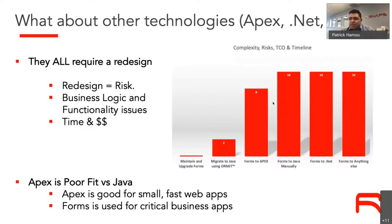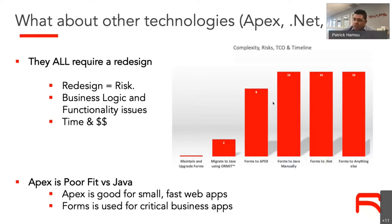Looking at other choices, some companies choose to migrate to APEX, which is included in the database. However, a disadvantage is you remain locked into Oracle. More importantly, any approach other than ORMit Java — whether moving to APEX, manually to .NET, or anything else — will require a redesign, which means risk, re-analyzing business logic, and a lot of time and money.